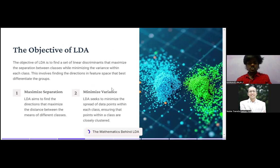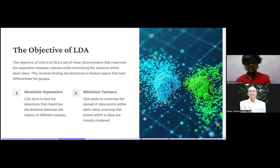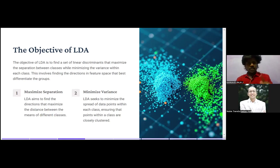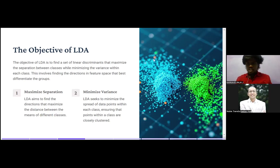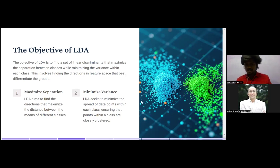The objectives of LDA are simple. The objective is to find a set of linear discriminants that maximize the separation between classes while minimizing the variance within each class. This involves finding the direction in the feature space that best differentiates the groups. You can see the blue and green colors on screen — there should be more separation between them. LDA aims to find the directions that maximize the distance between the means of different classes.